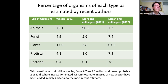Larson's team estimates there are likely to be at least 1 to 6 billion species on Earth. The new pie chart of life is dominated by bacteria — approximately 70 to 90 percent of species — and insects are now only one of many diverse groups.